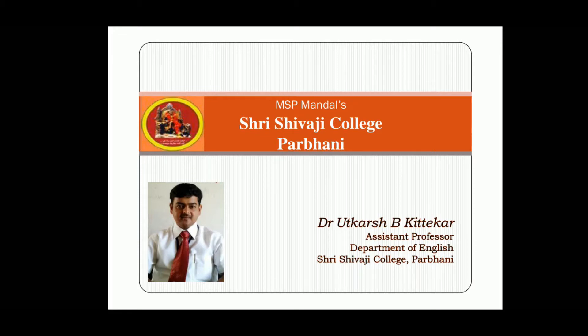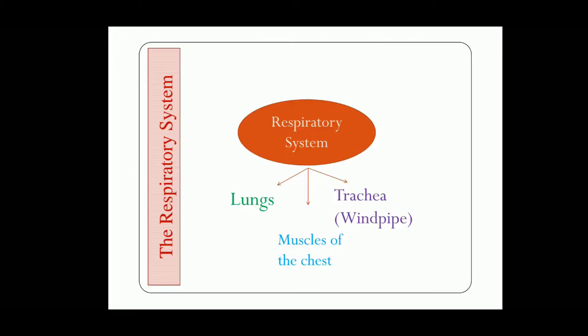Friends, in this video we shall try to cover the two systems engaged in the production of speech sounds. The first one is the respiratory system. As you can see in the image, the respiratory system has three parts — three different organs are engaged in the respiratory system.